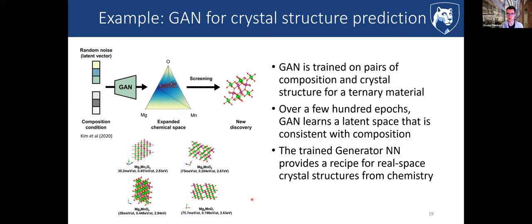GANs have been used recently for crystal structure prediction. An extension called conditional GANs not only learns to map randomness into realistic samples, but also learns to include composition constraints on that mapping — given a composition, it can generate an ensemble of plausible crystal structures. This is exactly the kind of approach we're going to be pursuing: using a generative model with a conditional constraint.